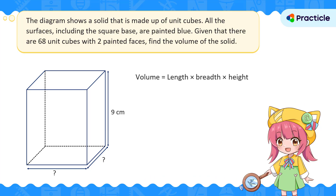Let's try to use the number of cubes to help us find the missing length and breadth. We're only interested in finding all the cubes with two painted faces. Let's look at the cubes along one side of the height — since the height is 9 cm, we can stack 9 cubes from bottom to top. The cube on top has three painted faces: the top, the side, and the back. So this cube is not what we want.